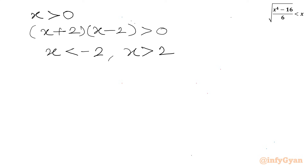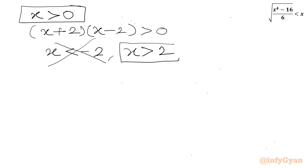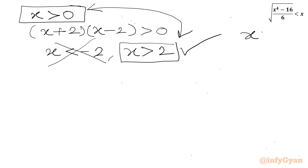Since x < -2 would violate our first condition that x must be positive, we reject that part. So the accepted condition from the second inequality is x > 2. Taking the intersection of both conditions, the conclusion is x > 2.